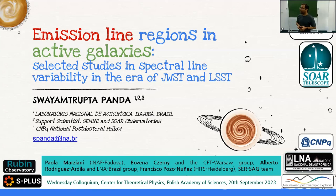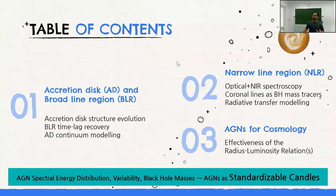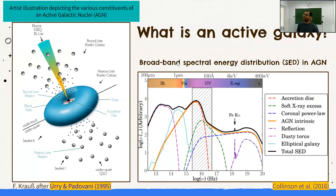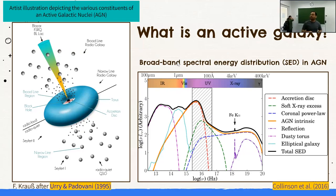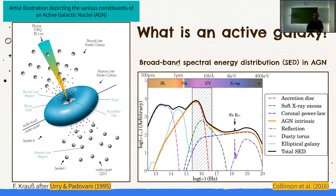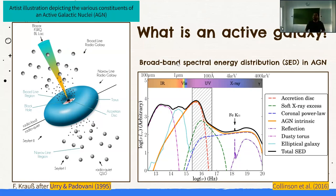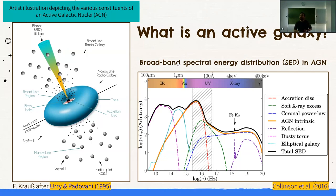Very briefly: matter accretes onto a supermassive black hole forming an accretion disk. There are cloudlets bound to the gravitational potential of the black hole — the nearby ones are known as the Broad Line Region, because they photo-ionize light and emit lines with much broader profiles, with velocities up to tens of thousands of kilometers per second. Viewing from certain lines of sight, jet emission can obscure the material emission from these regions.